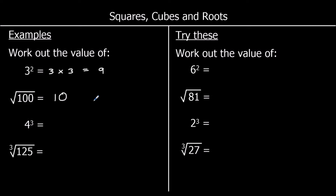When we cube a number we multiply it by itself and then multiply by itself again, so four cubed means four times four times four. Four times four is 16 and 16 times four is 64. The cube root of 125: what number cubed makes 125? Five times five times five is 125, so the cube root of 125 is five. Pause the video, try the four questions, and press play when you're ready for the answers.